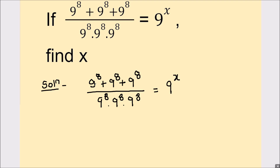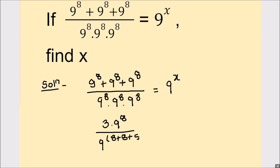In the numerator we have 9 raised to power 8 three times, so that is going to be 3 times 9 raised to power 8. In the denominator the exponents will be added, so that's going to be 9 raised to power 8 plus 8 plus 8.